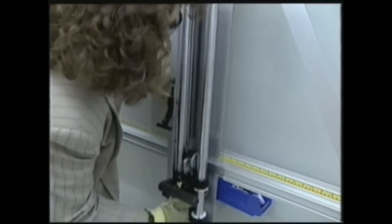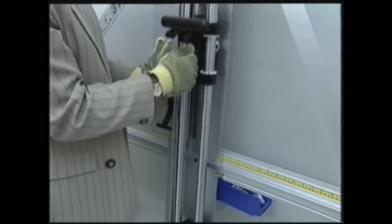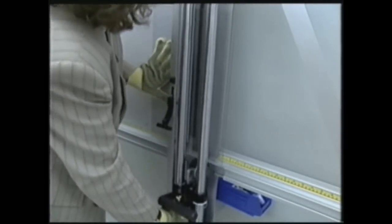Too much pressure causes the score to appear chalky and flakes of glass will be dislodged. The glass will not break out as easily if too much pressure is used.